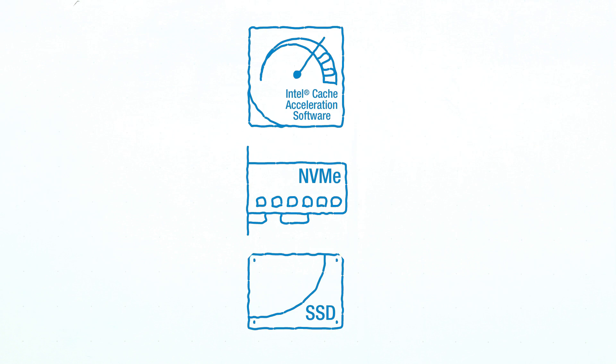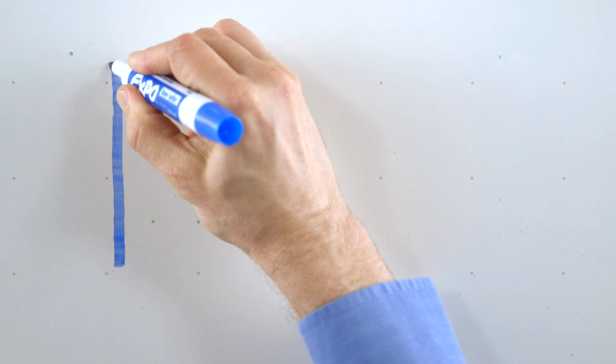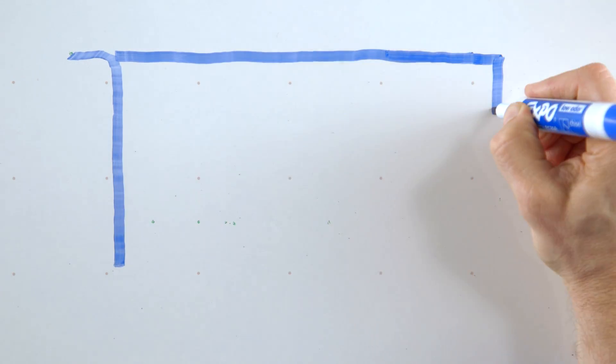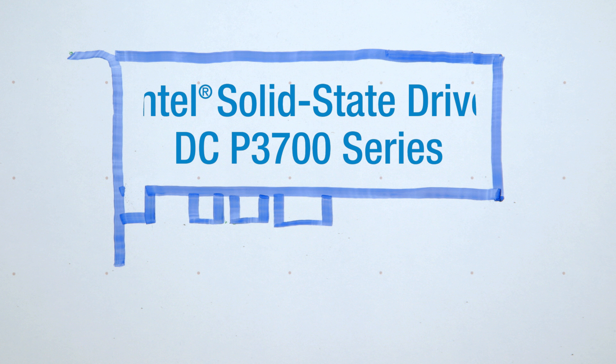We've been working on Intel SSD technologies, specifically the Intel PCIe NVMe SSD family. We've actually come out with a new NVMe PCIe-based SSD. It's the first from Intel. We call it the Intel DC-P3700 series SSD.